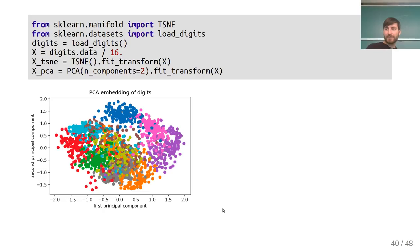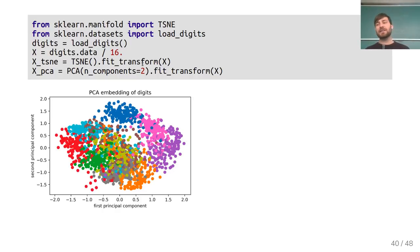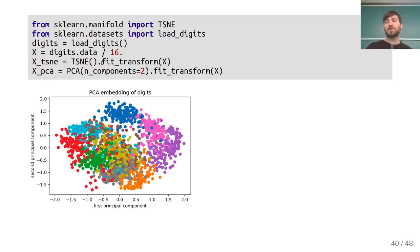Comparing PCA to t-SNE on the digits dataset: PCA gives an interesting plot but with much more overlap between classes. t-SNE gives much clearer separation. t-SNE currently doesn't have a transform method in scikit-learn, so you can only call fit_transform — it fits and transforms on the same data — though other implementations do allow transformation of new data.